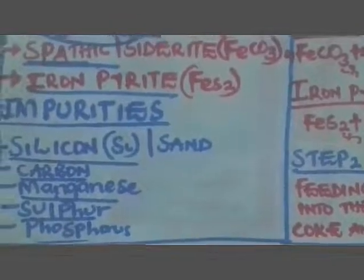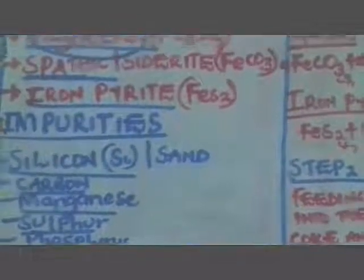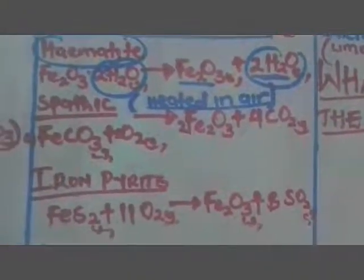When we are extracting iron, we take some steps. The first step is what we call roasting of the ore. This is mainly done when dealing with hematite. Roasting means dry heating the ore — you are dry heating the ore to remove water. The ore contains some water, and when you dry heat it through roasting, you remove that water and obtain dry iron(III) oxide.